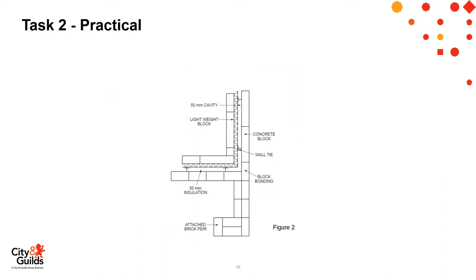This is a plan view of the model, clearly showing the insulation. Passing back to the block work with ties and clips. We left the dimensions off purely because they can be taken from the previous drawing.